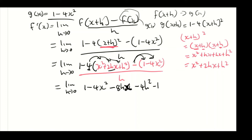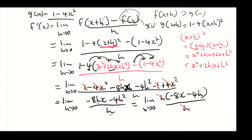This equals the limit as h approaches 0. We factorize h from the numerator so it cancels with the denominator h. After factoring: limit as h approaches 0 of (minus 8x minus 4h). Substituting h = 0 gives minus 8x minus 4 times 0, which equals minus 8x. So our answer for f prime of x using first principles is minus 8x.